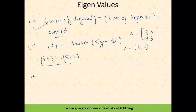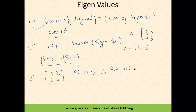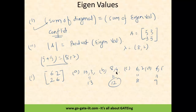Let's see one more example. Given matrix [6,2; 2,6], with options A: 10,3 — B: 8,4 — C: 6,2 — D: 4,5. Following the first formula (sum of eigenvalues = trace): 6+6=12. Checking the options: 10+3=13, 8+4=12, 6+2=8, 5+4=9. Since 12 matches option B (8+4), you can directly say B is the right answer.